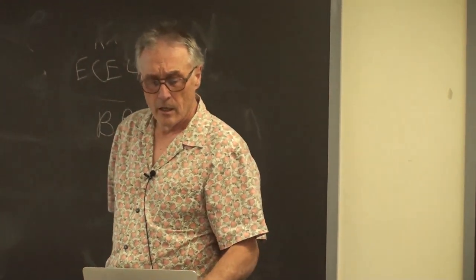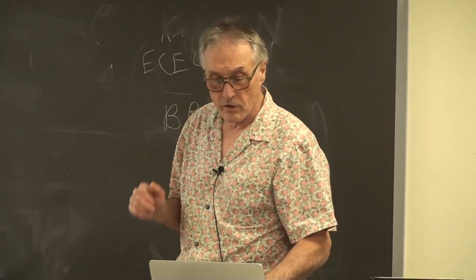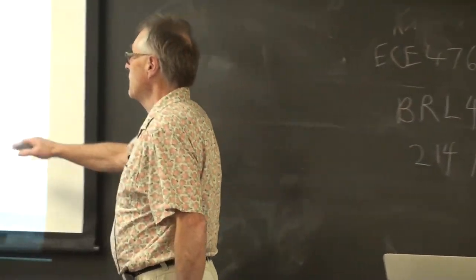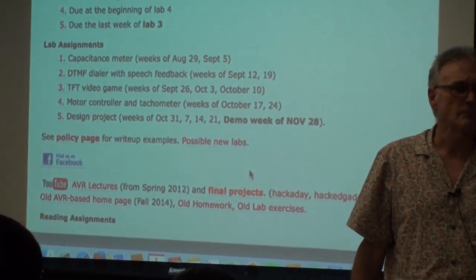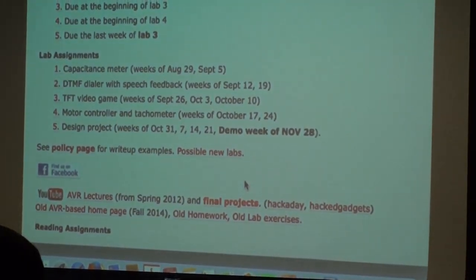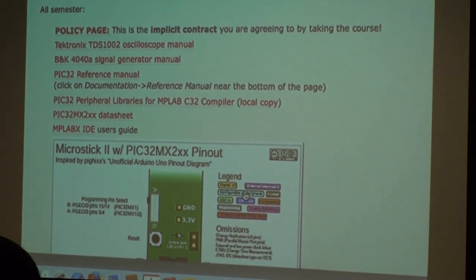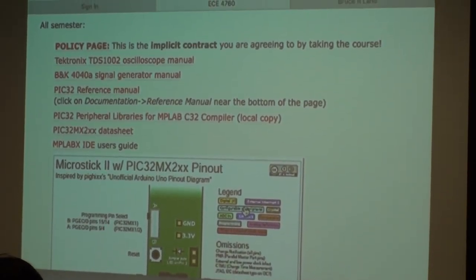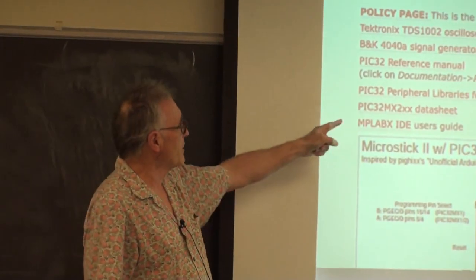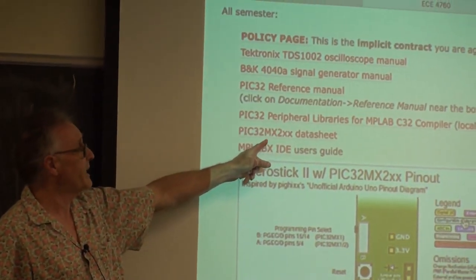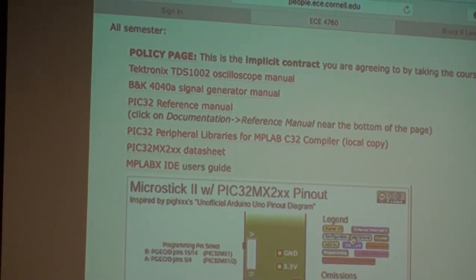First lab will be, as I said, starting next week next Tuesday. There is a policy page which we'll talk about in a minute which is effectively the contract you're signing by taking the course. It's what I expect you to do in the course. There's a few things you may want, you're going to have to read. I found when I was trying to figure out this architecture and write examples I found that I needed three documents all the time. One was the 32 MX2 data sheet which gives the gory details of the electrical properties of the chip which you're going to need for lab one or for homework one.